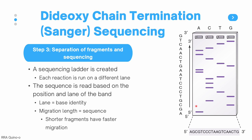Shorter fragments have faster migration. Bands that migrate farther indicate nucleotides closer to the 5' end where we have our primer, and larger bands migrate less, indicating nucleotides farther from the primer. Reading the gel from bottom to top — 5' to 3' end — the first band is in the A lane, so the first nucleotide is A, followed by G, then C, then G, then T, and so on until you reach the top band.